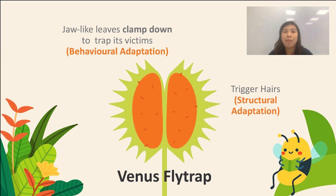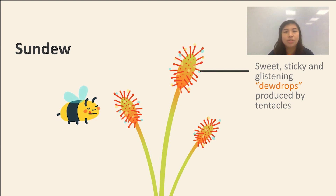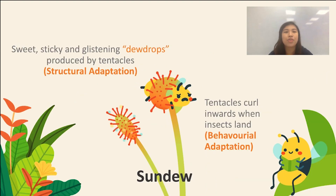Now that we are done with the Venus fly trap, let's take a look at the sundew. The sundew has tentacles that secrete sweet, sticky and glistening dew drops to attract insects. By the time the insect realizes that it has been deceived by this dangerous plant and struggles to escape, it will be too late. The sundew would have curled its tentacles inwards around the insect, gripping the insect tightly before starting to digest it. The structural adaptations of the sundew include having tentacles that secrete sweet, sticky and glistening dew drops to attract insects. The behavioural adaptation is the tentacles curling inwards around the struggling prey for a better grip before digesting it.